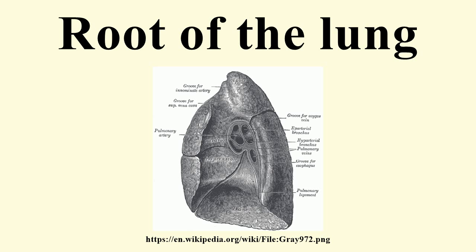Also on each hilum there are hilar bronchopulmonary lymph nodes. The parietal pleura surrounding the root of the lung extends downwards from the hilum in a fold called the pulmonary ligament. The lower end of this is sometimes referred to as the inferior pulmonary ligament. At the lower edge of each lung the pleural layers come into contact with each other and terminate in a free curved edge.